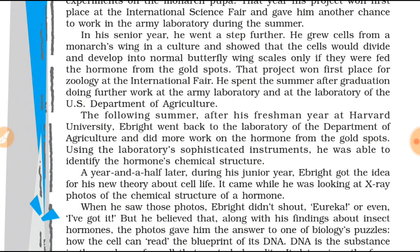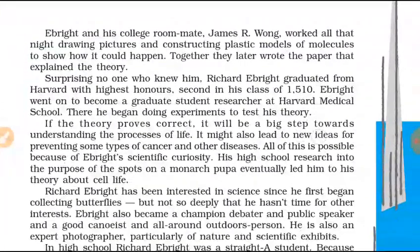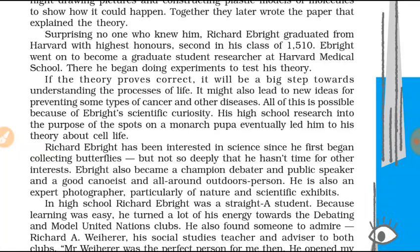Richard continued his research on the monarch pupa. He grew cells from the wings of a monarch butterfly and proved that cells grow into wing scales only when injected with hormone from the gold spots. He carried on his work at an army laboratory and the US Department of Agriculture laboratory. After his freshman year at Harvard, he returned there to identify the chemical structure of the hormone, which gave him a new idea about cell life.